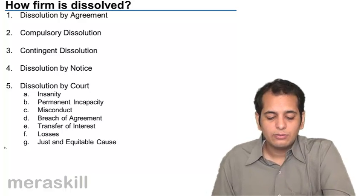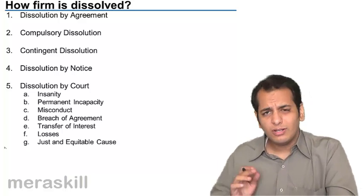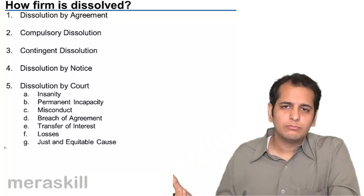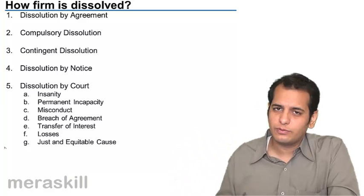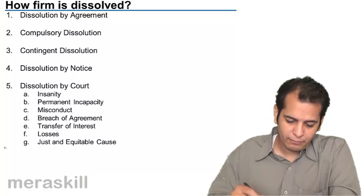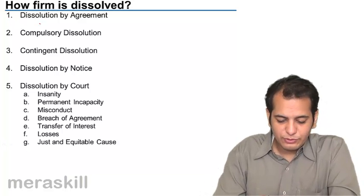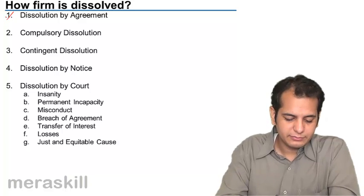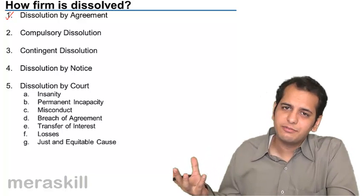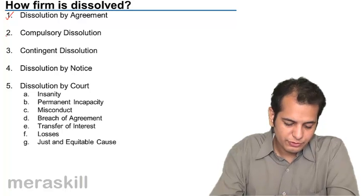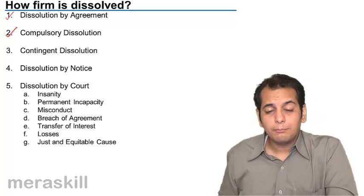Let's see now how a firm is dissolved, what are the different ways or modes of dissolving a firm. The first is dissolution by agreement. When partners mutually agree with each other, the firm gets dissolved.